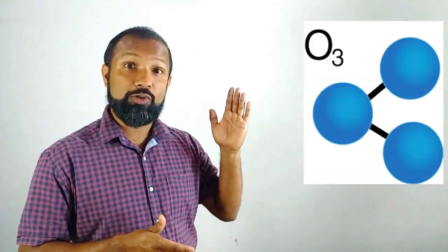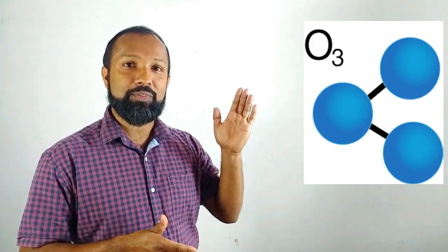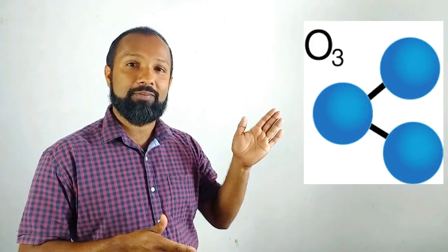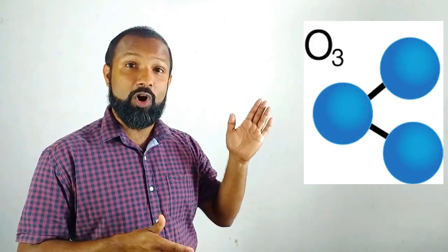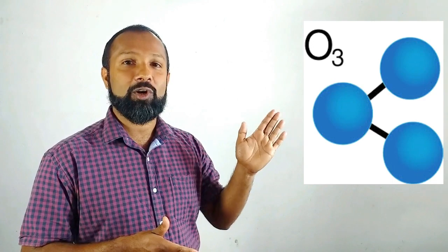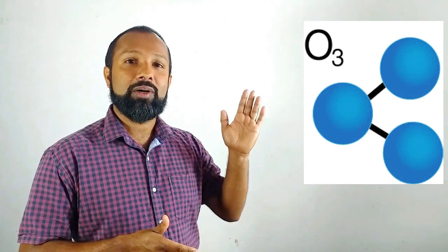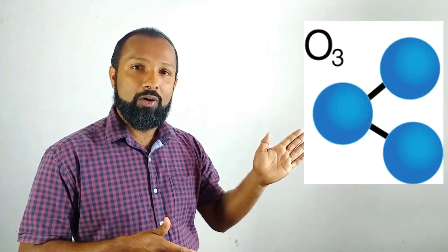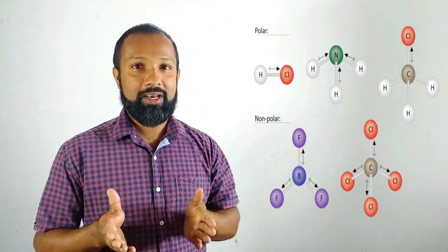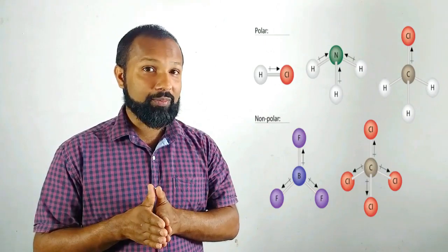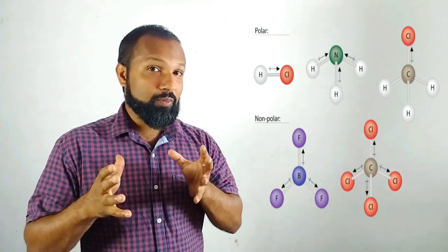Ozone gas is also a homoatomic molecule — it is made up of three oxygen atoms. Now let's talk about some examples of heteroatomic molecules — molecules made up of two or more different types of atoms.